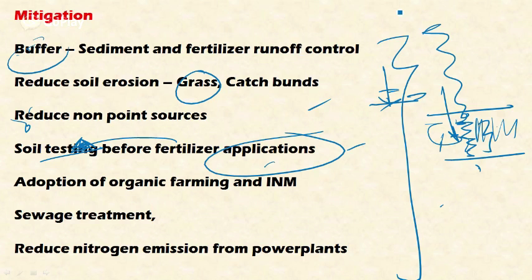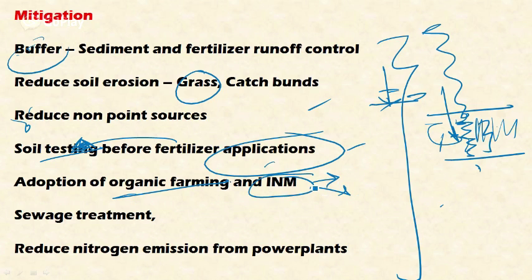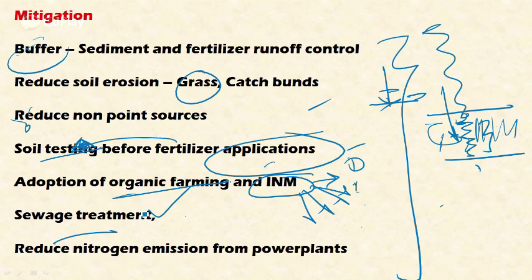Adoption of organic farming reduces the use of fertilizers, and integrated nutrient management — combining organic, inorganic, and other fertilizer sources — also reduces fertilizer runoff to nearby water bodies, thereby reducing nutrient addition. Finally, proper sewage treatment before releasing water into water bodies also reduces eutrophication. Thank you for watching; please share and watch my previous videos on the environment and ecology series.